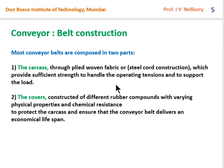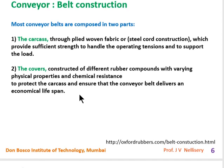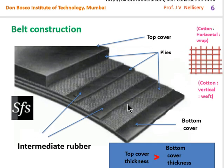The carcass provides sufficient strength to handle operating tensions and to support the load. The cover protects the carcass or the body — it has certain physical and chemical properties by which it provides covering and protection to the main body of the belt.